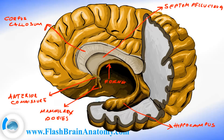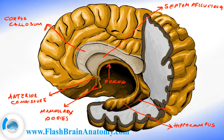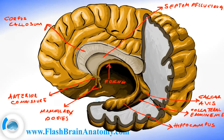We had the lateral ventricle — this space over here. We have opened the lateral ventricle, that's why we can see what's inside. This was the collateral eminence. This was the calcar avis, made by the calcarine fissure from the outside. And this over here is the bulb of the posterior horn.